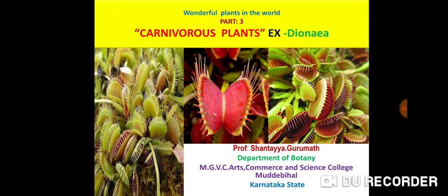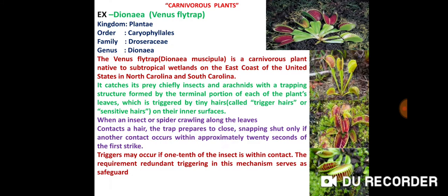Friends, today's class we discuss about wonderful plants in the world — carnivorous plants. The best example is Dionaea. Dionaea is commonly known as Venus Flytrap. It comes under Kingdom Plantae, order Caryophyllales, family Droseraceae, genus Drosera. The Venus Flytrap or Dionaea muscipula is a carnivorous plant native of subtropical wetlands on the east coast of the United States, in North Carolina and South Carolina.